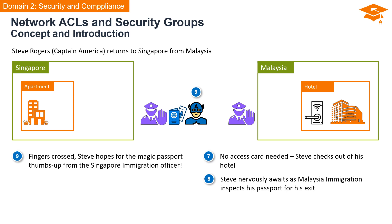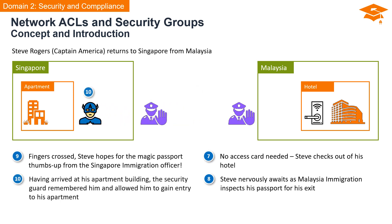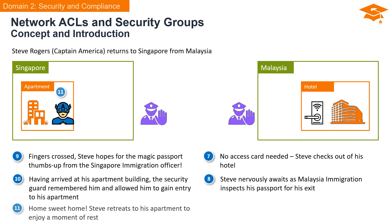After clearing Malaysia Immigration, Steve queues up at Singapore Immigration, hoping for a positive outcome. He eventually reaches his apartment building, where the security guard remembers him and grants him access. Back at home, Steve retreats to his apartment to enjoy some well-deserved rest.